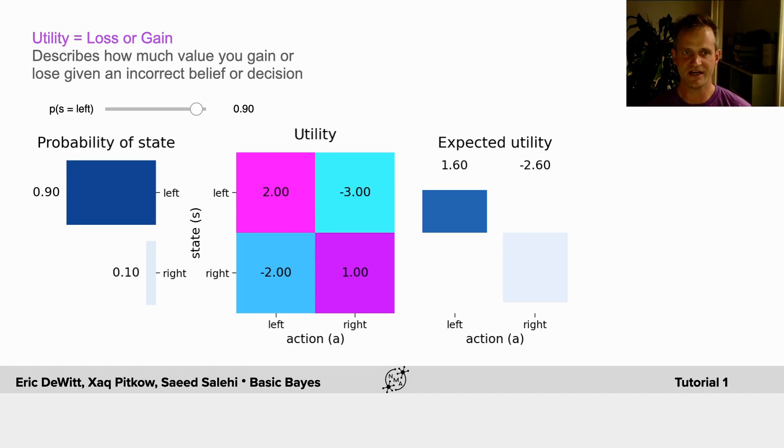And you can see a slider that controls that probability, and it will show you your expected utility for the possible actions of fishing on the left or the right.